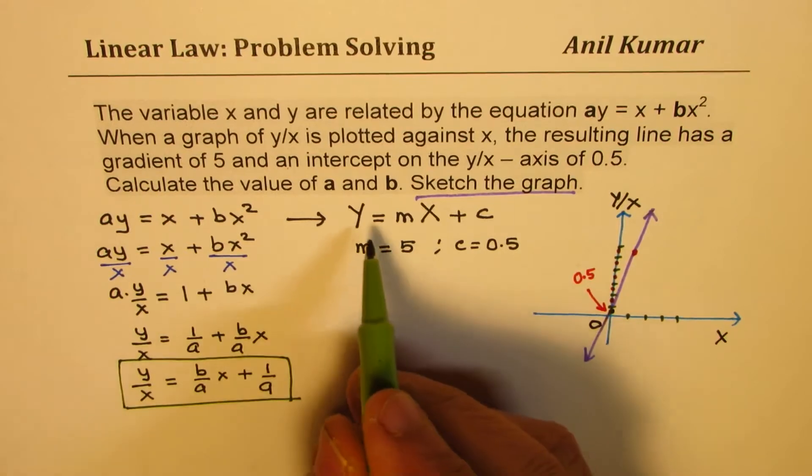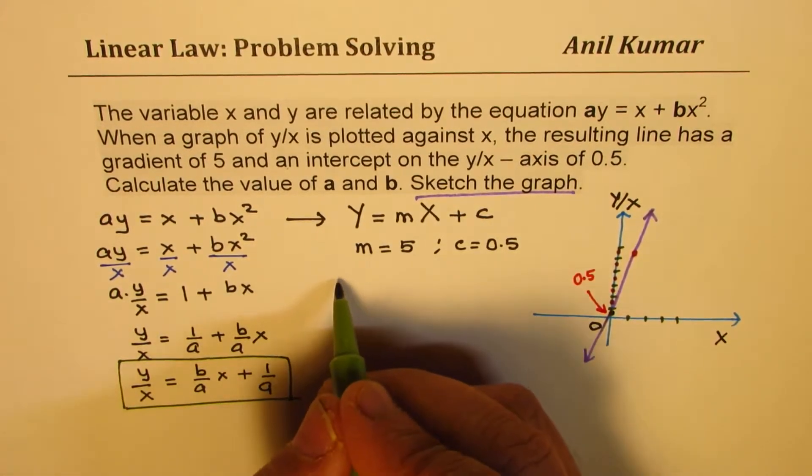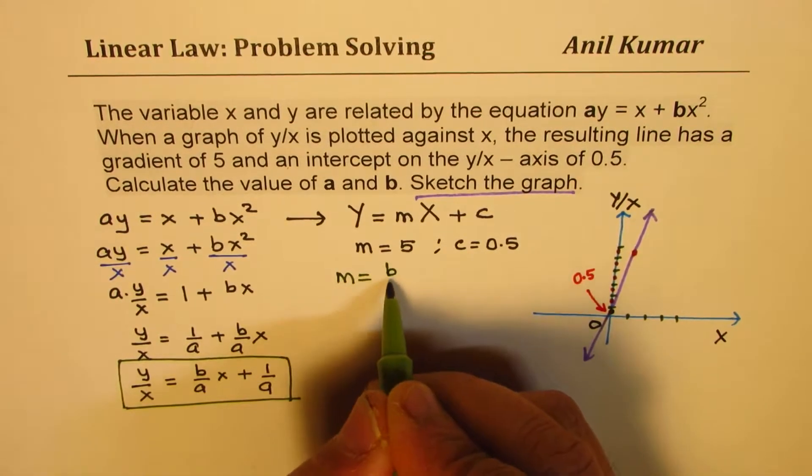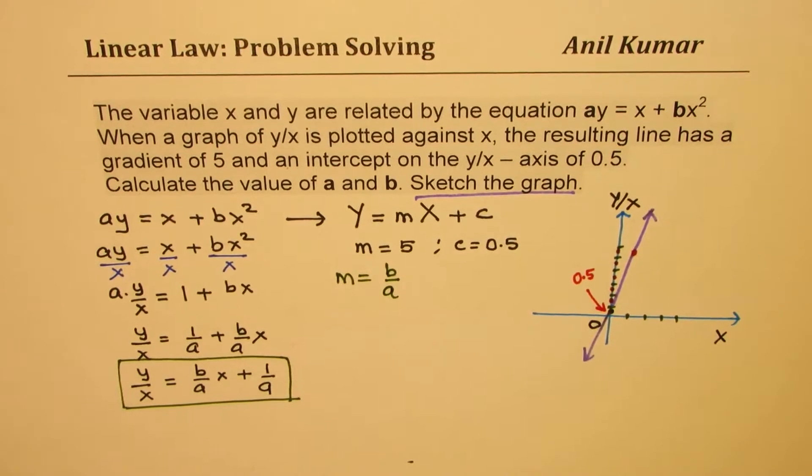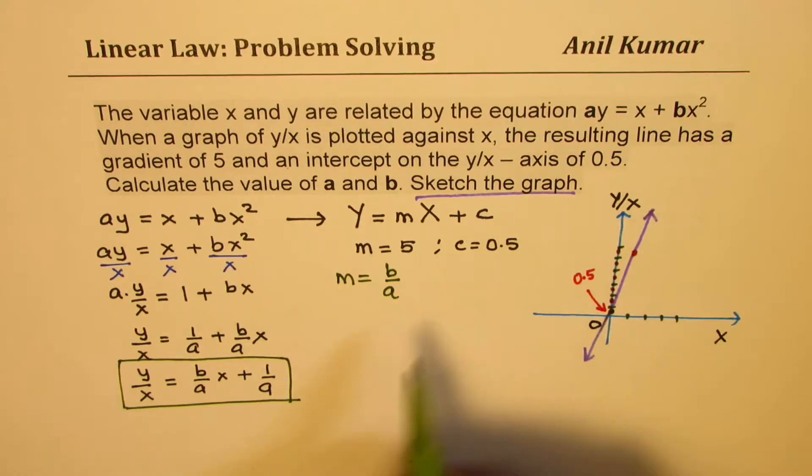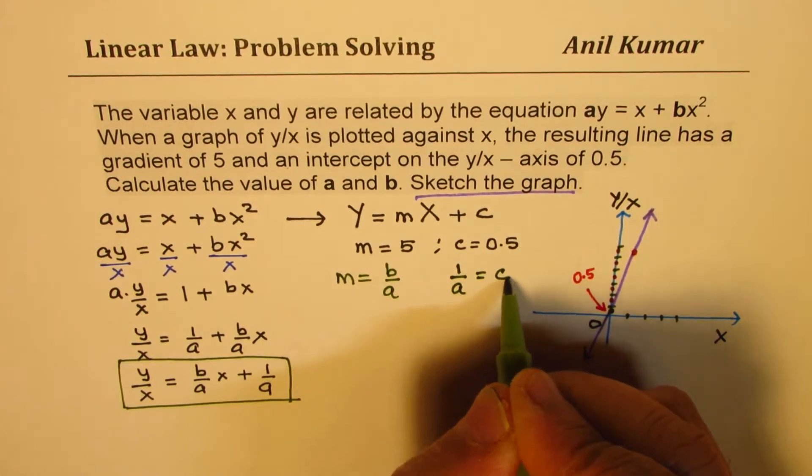If you compare, you can see that y/x is Y. Gradient is b/a. So from here, m is equal to b/a. And c, the intercept on y/x, is 1/a. So we have c as 1/a.